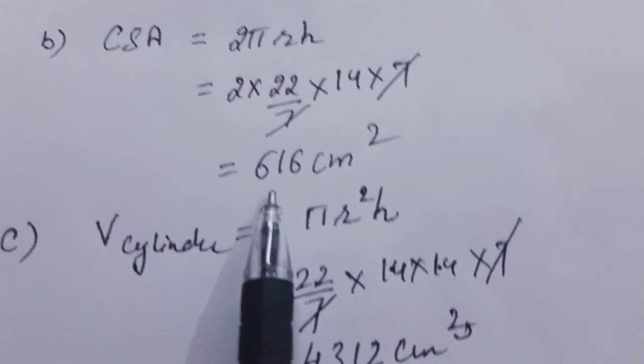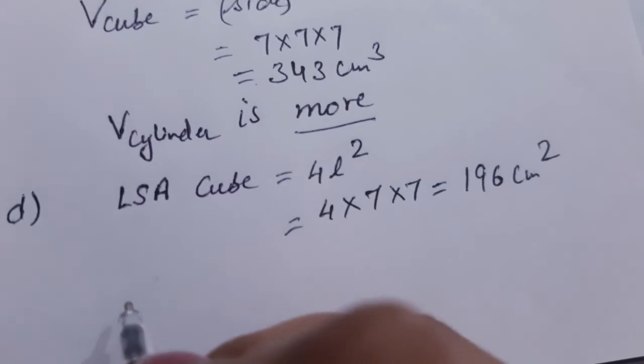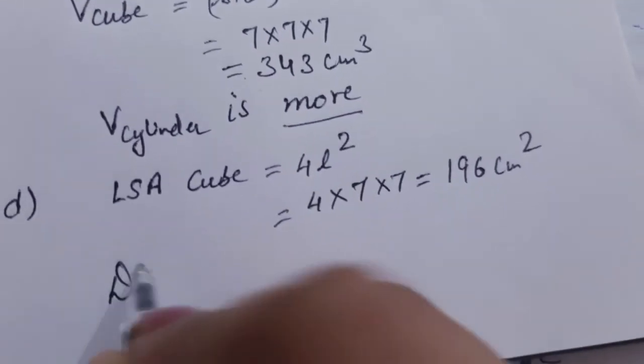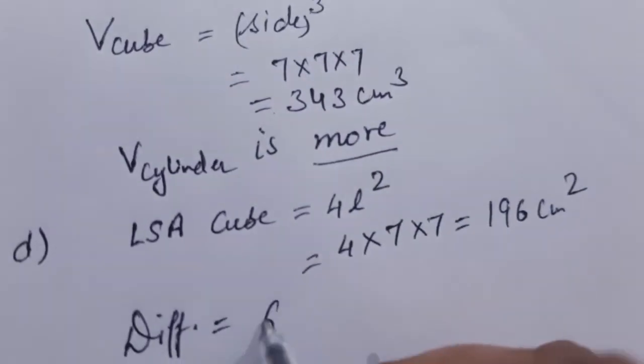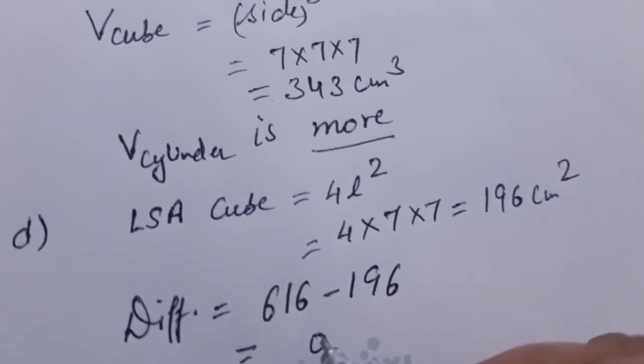The difference will be 616 minus 196, which comes out to be 420 centimeter square.